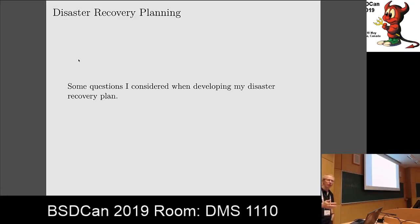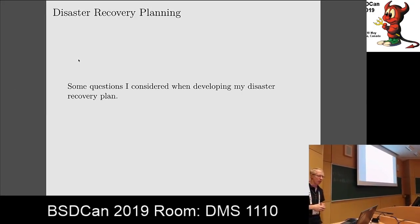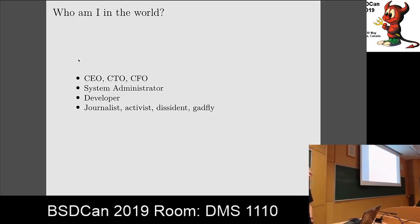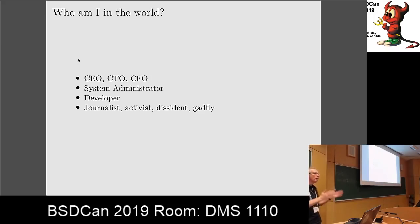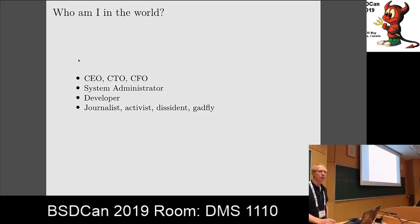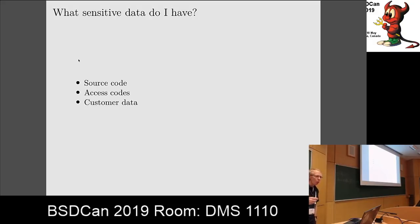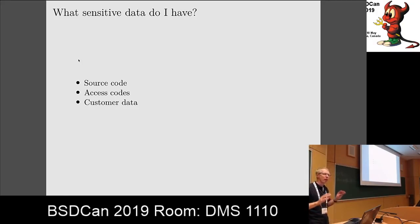For disaster recovery planning, I ask myself some questions — and these are questions you can ask yourselves. Who am I? For some people, maybe there are CTOs here. Am I a system admin? Am I a developer? Or are you Glenn Greenwald? There are people who have as important data as developers who aren't necessarily developers. This system probably isn't right for your average journalist, but it's thinking along the same lines. What sensitive data am I carrying? Do I have the company source code? Access codes? Customer data? When I'm consulting, my goal is that if there's an incident, my name isn't attached to it.